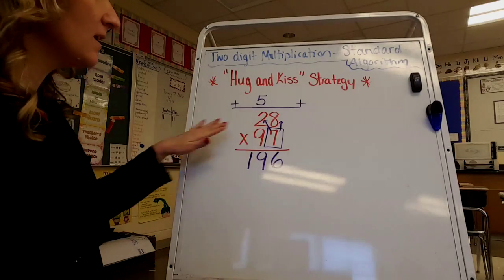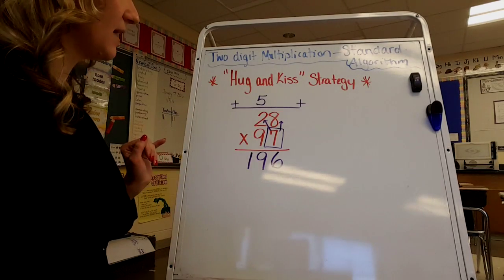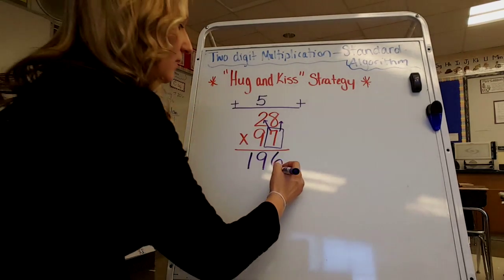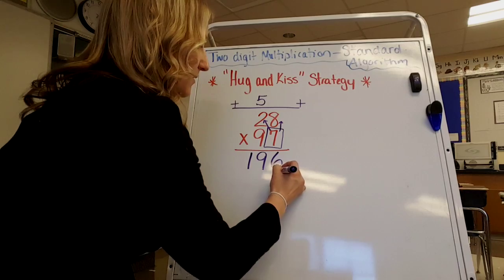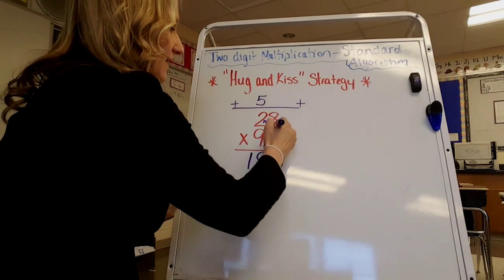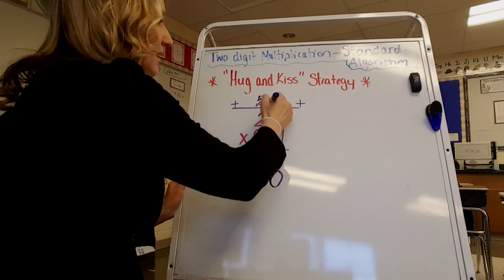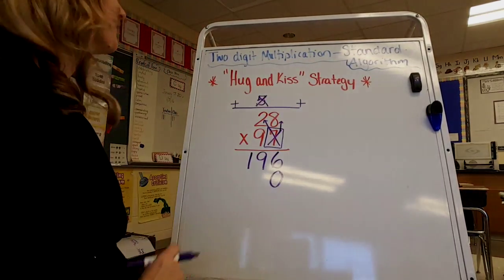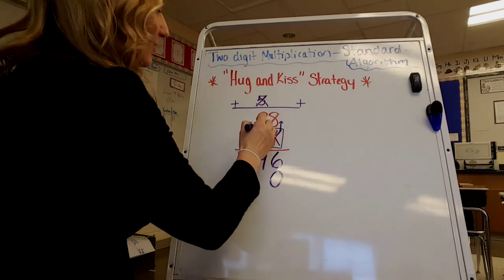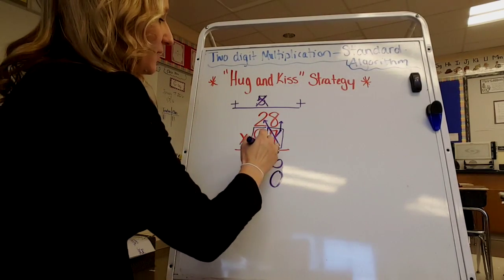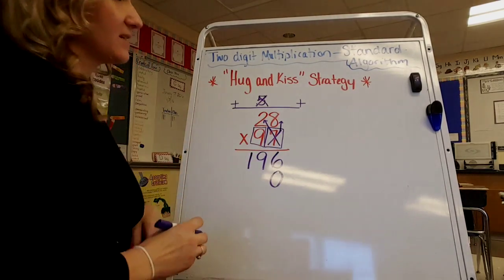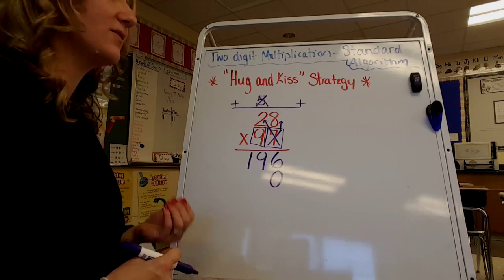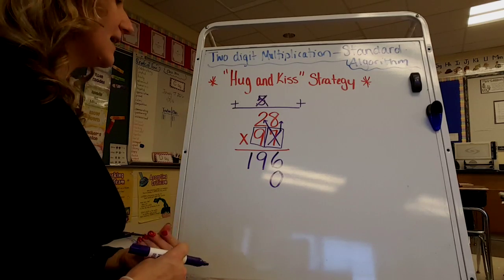Now, because there's nothing else to multiply the 7 by on the top, we need to give number 7 a hug and a kiss goodbye. Now we move on to the 9, which is in the tens place. Again, we're going to call it 9 in this strategy — we are not going to call it 90.